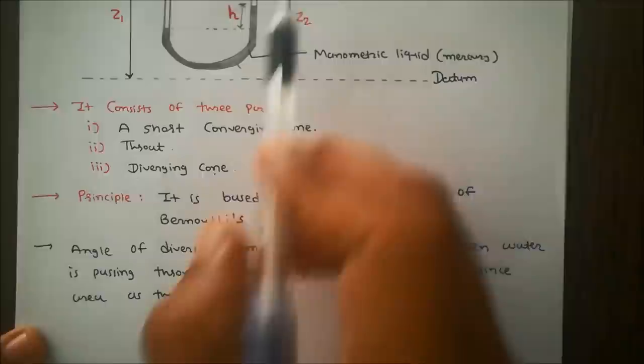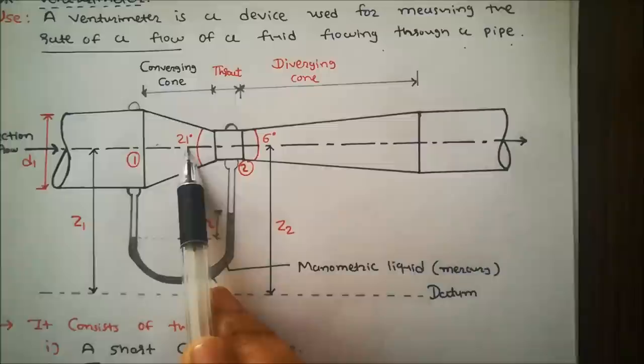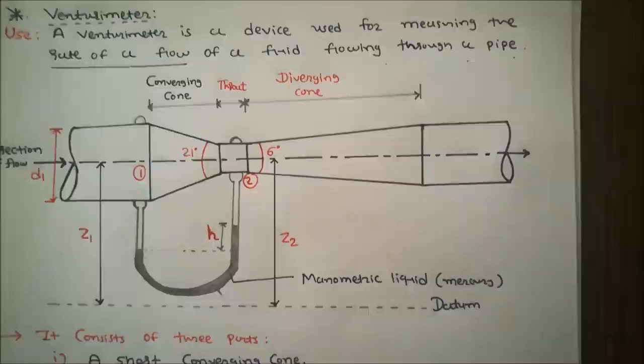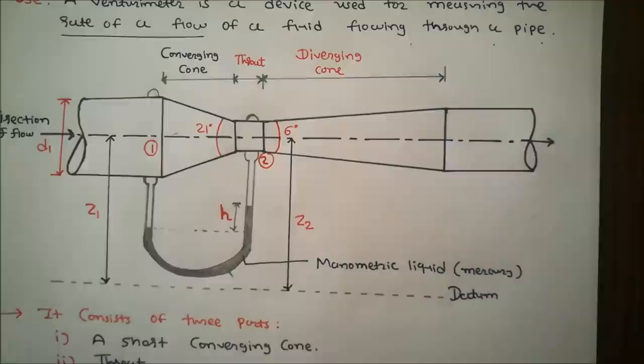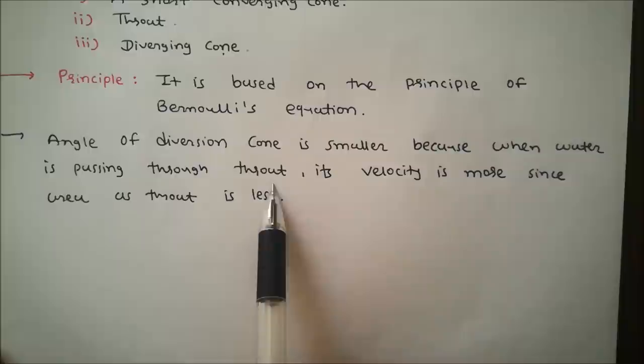The angle of the diverging cone is 6 degrees, and the angle of the converging cone is 21 degrees. The angle of the diverging cone is smaller because when water passes through the throat, its velocity is higher since the area at the throat is less.